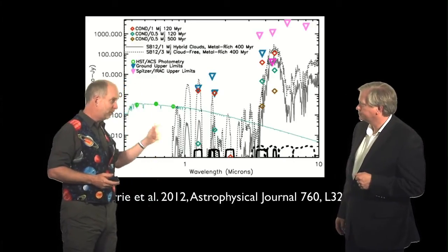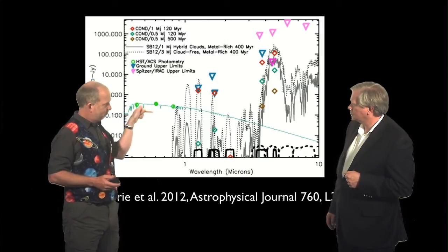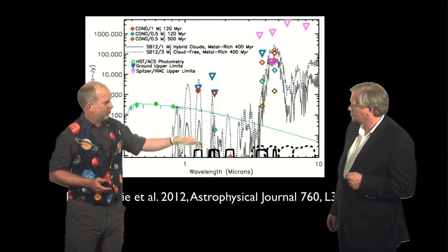However, when we look at the Hubble Space Telescope in the optical, it's booming in. So somehow it's producing optical light, but not infrared light.